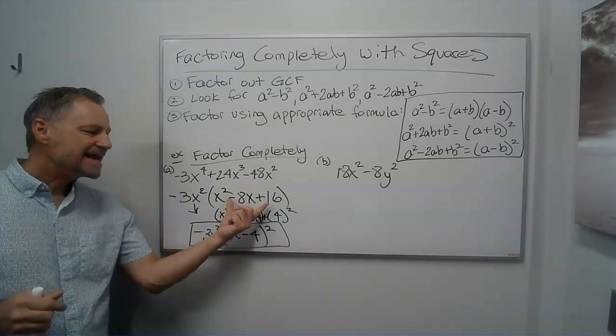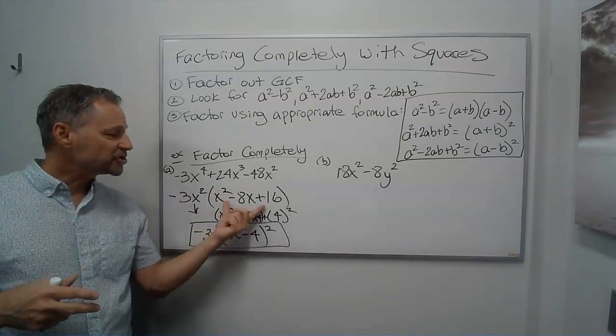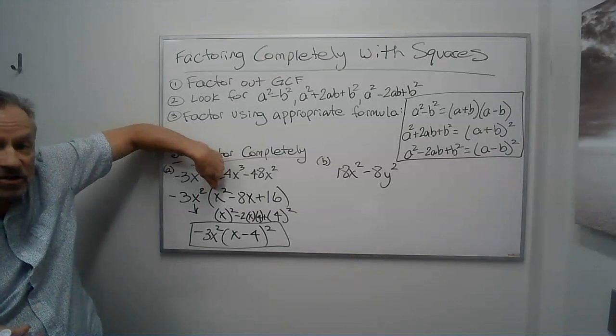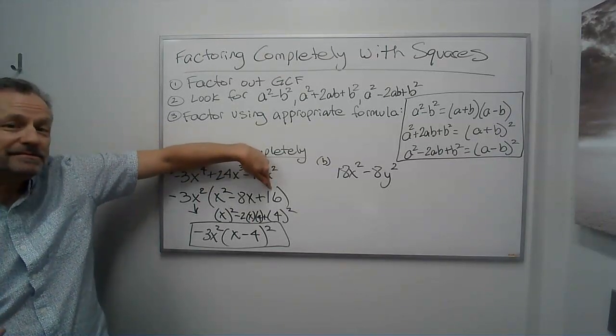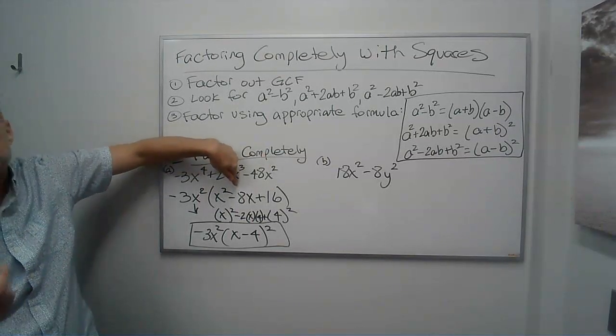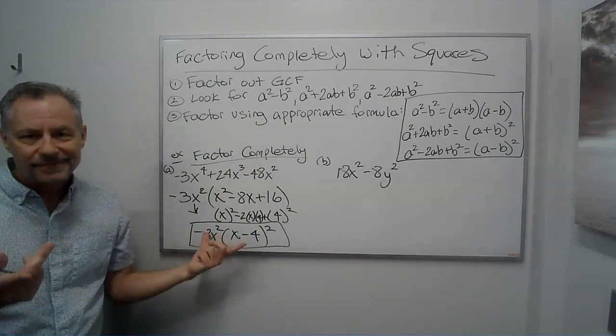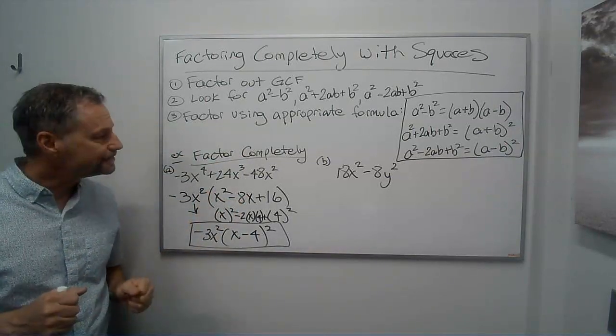Now, you didn't have to use perfect square trinomials to do this. You may have said, oh, it's just an x squared. Two numbers that multiply to positive 16 and add to negative 8. It has to be negative 4, negative 4. Yeah, you could do it that way as well.